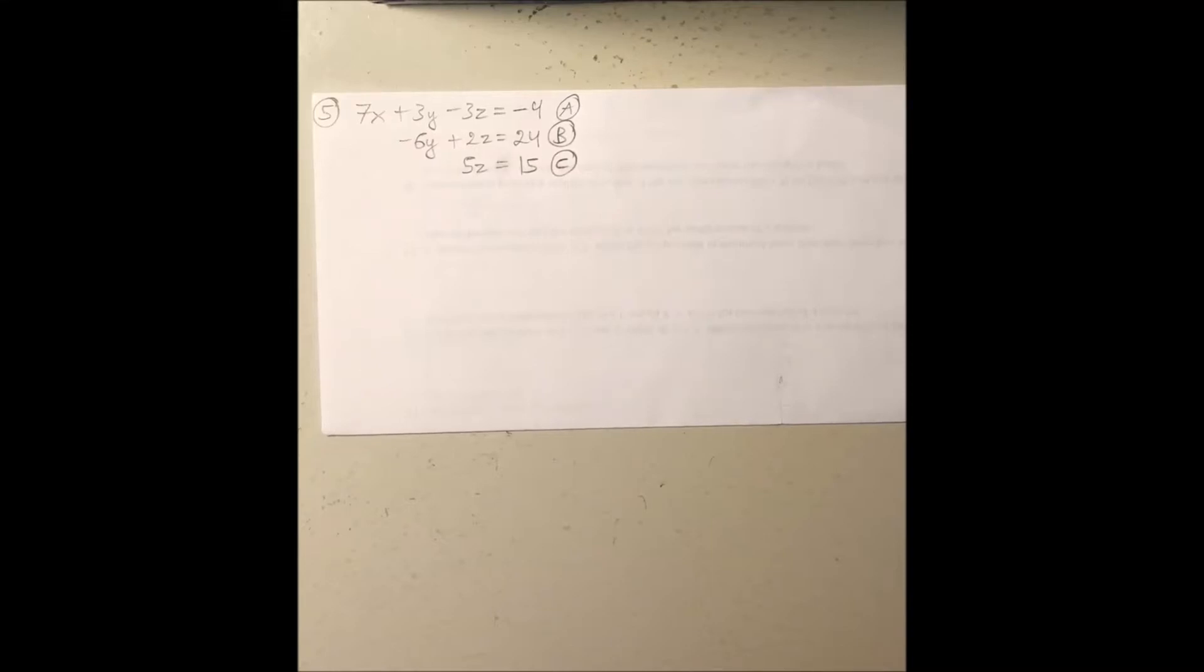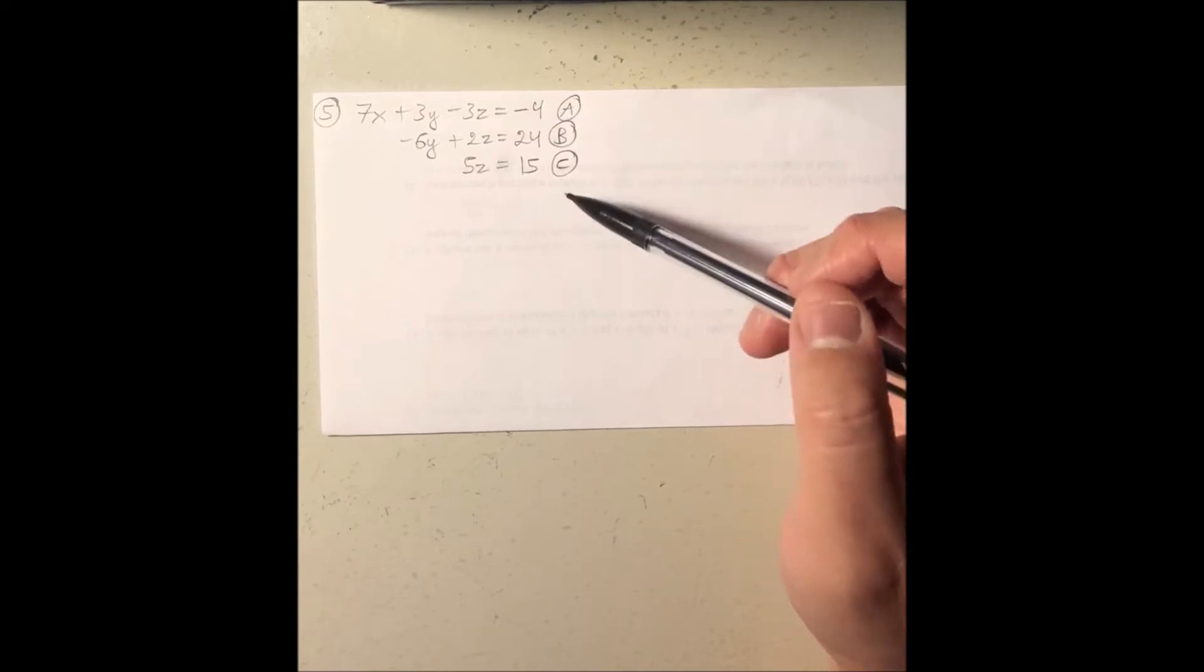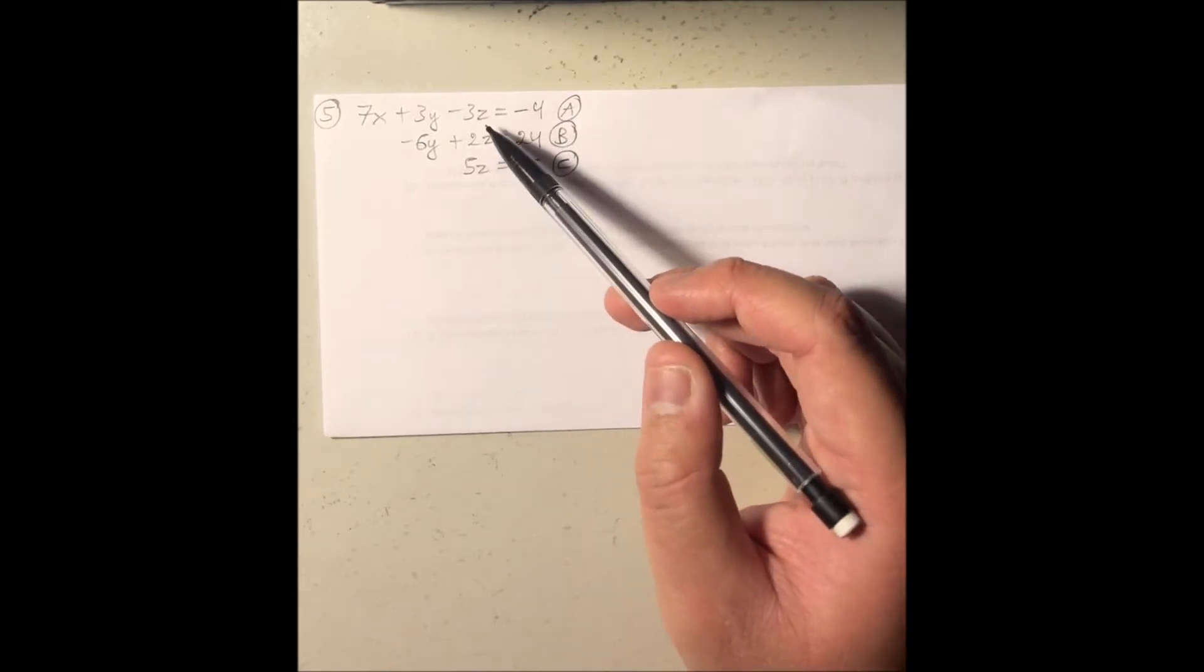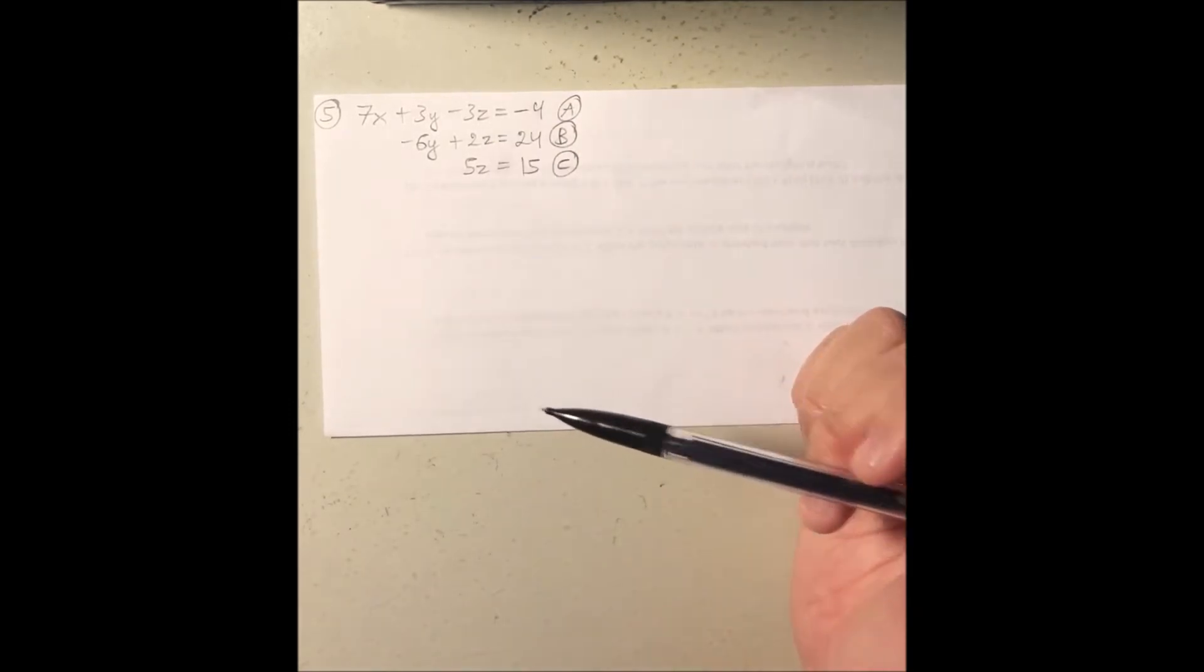Okay, here's the fifth example of solving for a three-variable system of equations. Now, looking at these three equations, all of them are already in standard form, so I'm good to go.